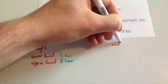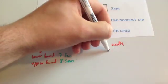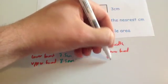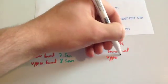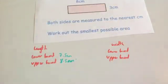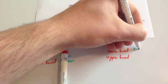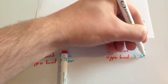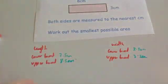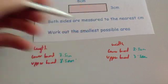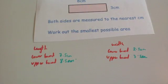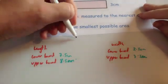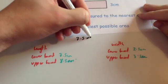The width is 3 centimetres, so the lower bound is 2.5 centimetres and the upper bound is 3.5 centimetres. Now, to work out the smallest possible area, we're going to multiply the two lower bounds together. So we're going to do 7.5 times 2.5.